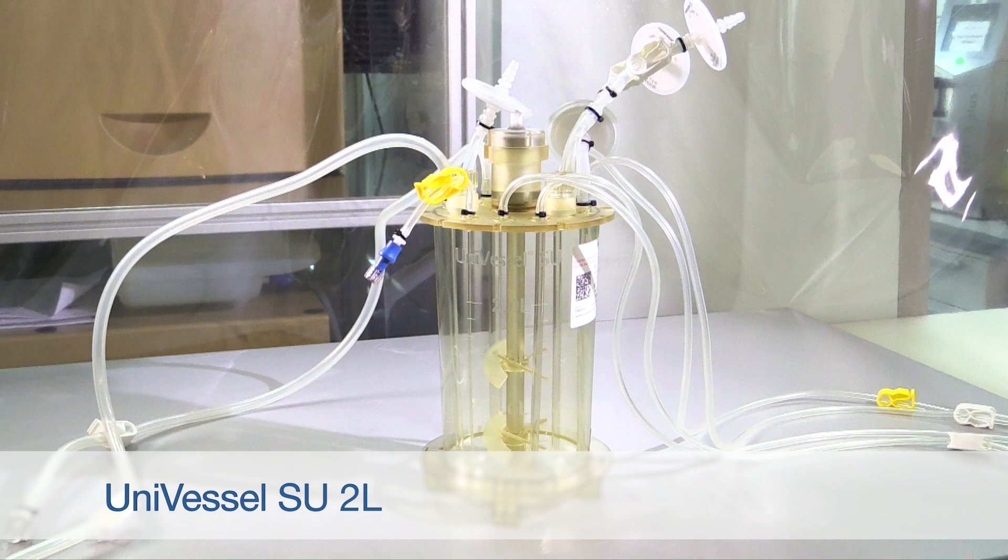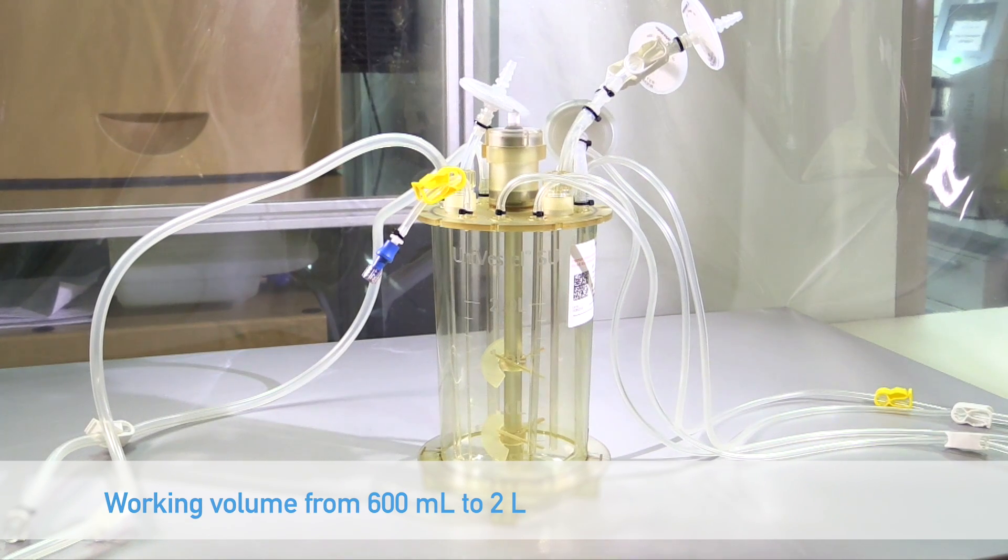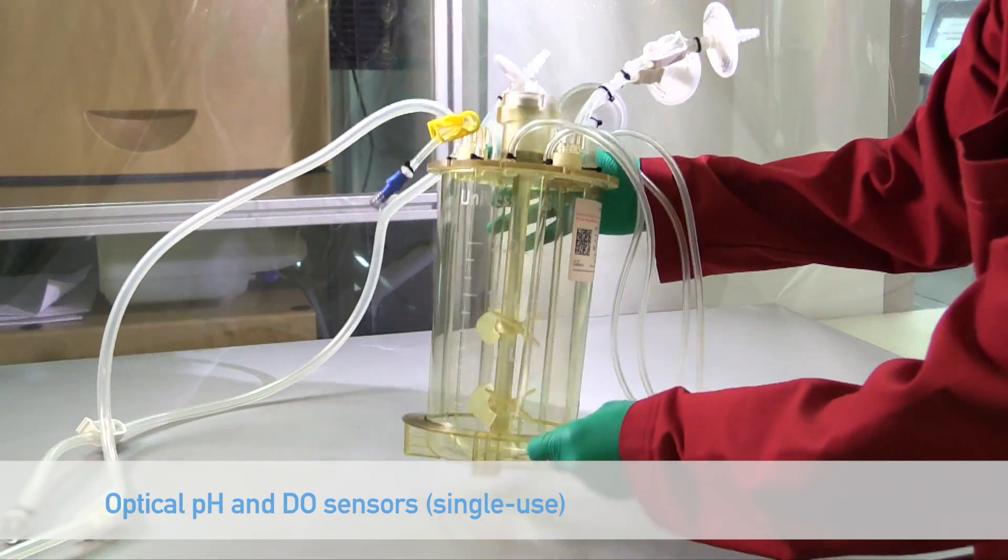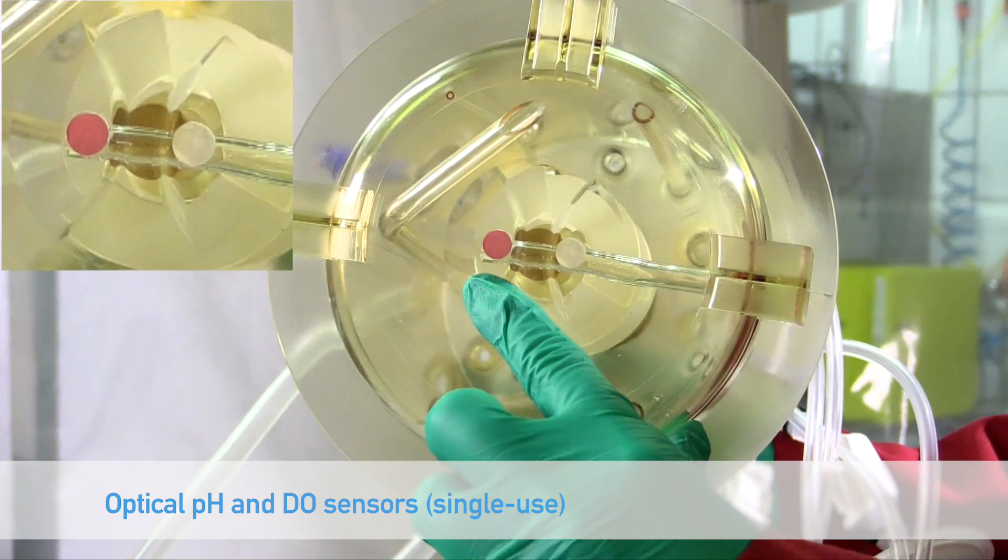The Universal SU is a gamma-sterilized rigid polycarbonate vessel with a working volume from 600 mls to 2 liters. It is equipped with two three-blade segment impellers and optical sensors for non-invasive pH and dissolved oxygen measurement.